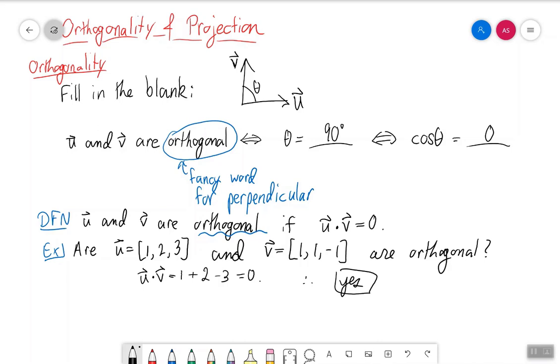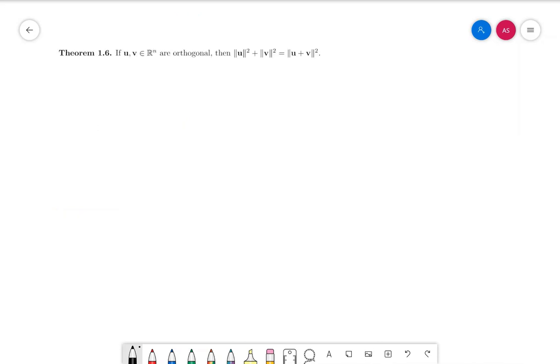And this now brings us to a theorem. Yay! Okay, so this is called the Pythagorean theorem in Rn.